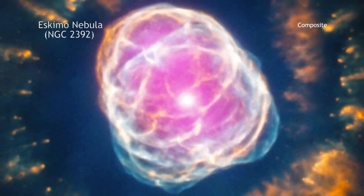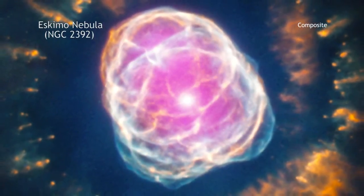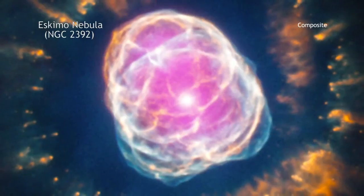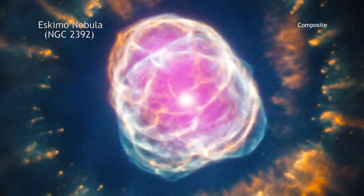The radiation from the hot star and the interaction of its fast wind with the slower wind creates the complex and filamentary shell of a planetary nebula.